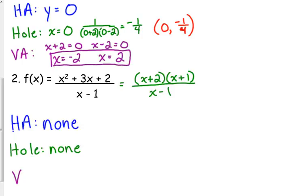So then vertical asymptote, what's left in the bottom? Well, it's x minus 1. So x equals 1 is our vertical asymptote.